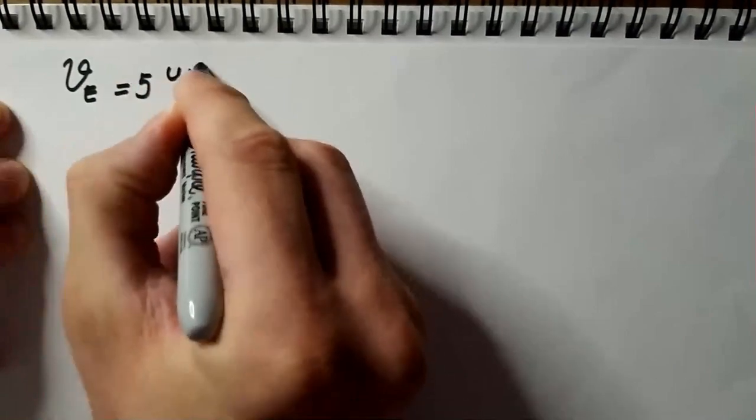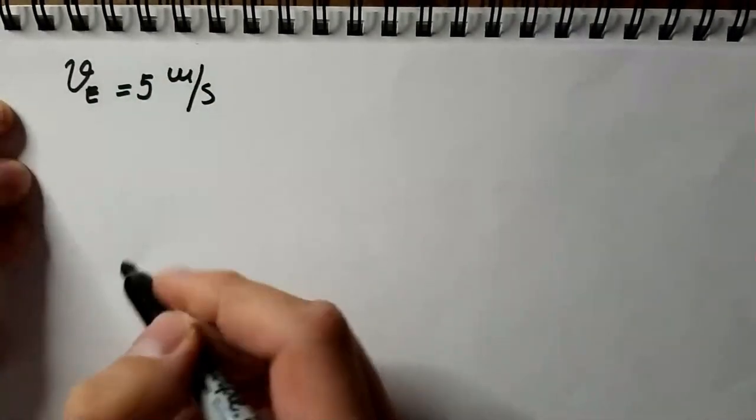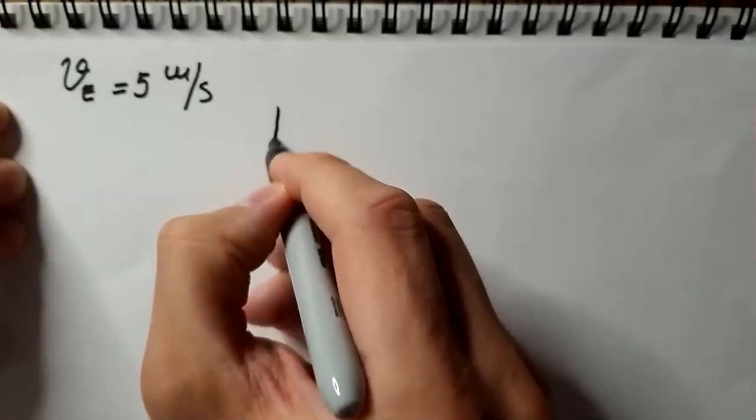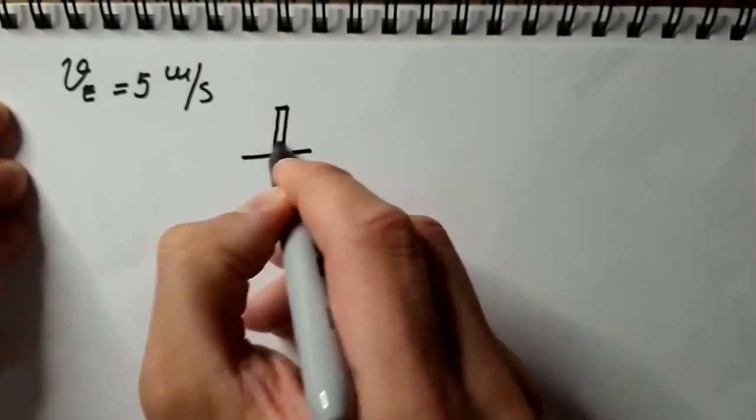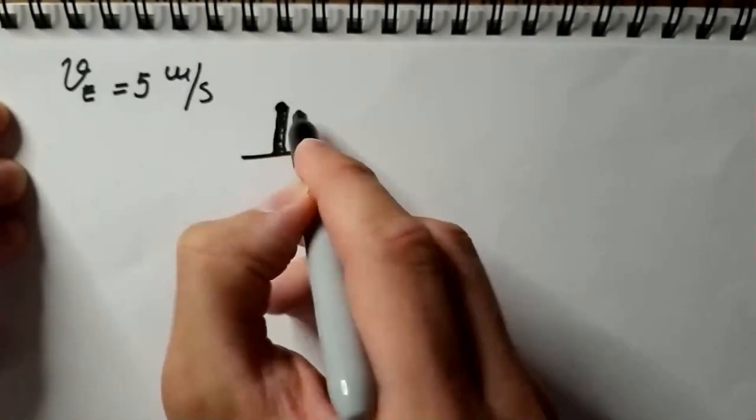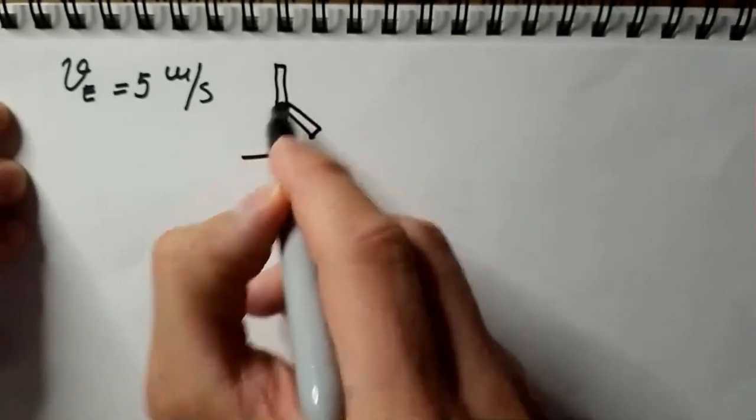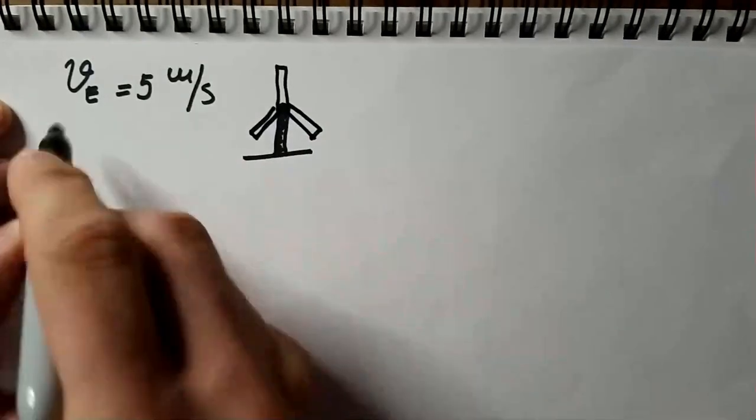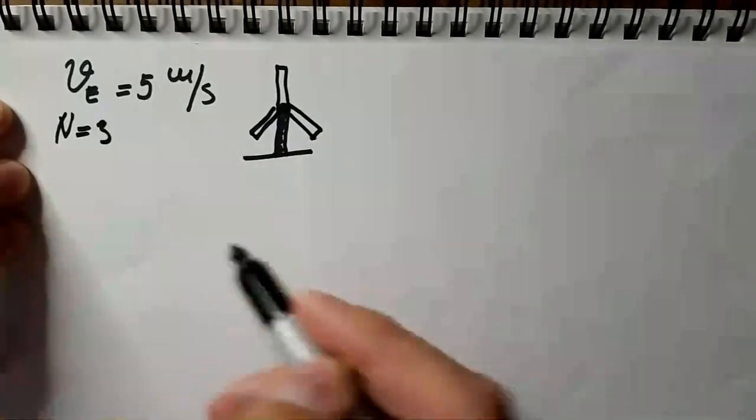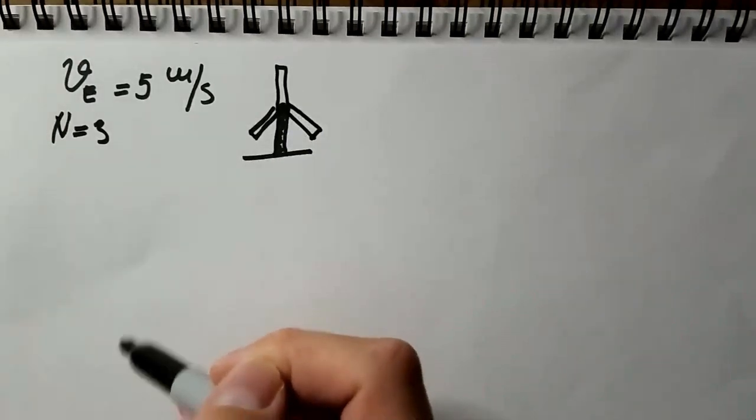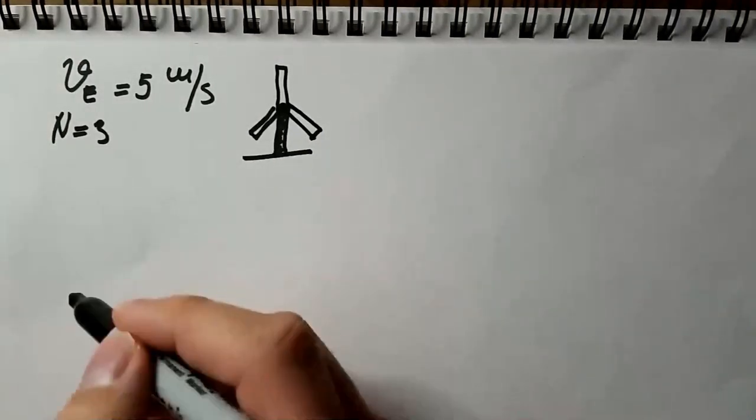So let's say we have an eagle flying at a velocity of five meters per second trying to find mice and let's say there is a wind turbine here. This is the tower of the turbine and let's assume it has three blades like this. So number of blades is three, N=3. Of course there are some wind turbines that have two blades and so on, but for now we'll assume it's a three blade wind turbine.